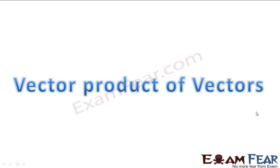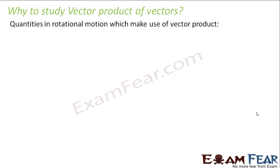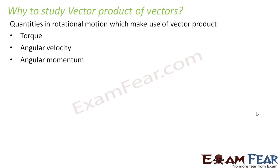We will now talk about vector product of vectors. We are all familiar with what are vectors and what is a scalar product or dot product of vectors. You might be wondering why, out of the discussion on system of particles, we are suddenly studying about the vector product. That's because as we start discussing rotational motion, we will talk about several quantities which describe it — for example, torque, angular velocity, angular momentum — and these quantities make use of vector product. So it is better that we understand vector product first.